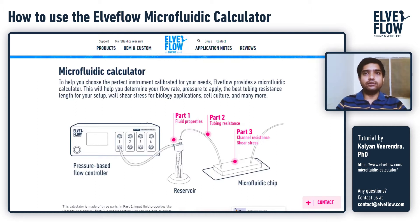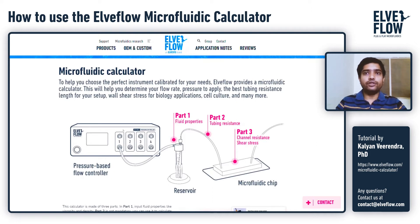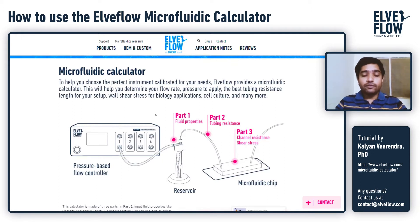To help you understand the overall system and its components, I will now describe them. The first component of any microfluidic system is the pump or pressure source, which is required to drive the fluid from the reservoir through the tubing into the microfluidic chip. As an analogy, we can think of the flow of electricity — just as you need a battery to drive electricity through a circuit, we require a pump or pressure source to drive the fluid into the chip. Together with the chip design, this determines the highest and lowest flow rates achievable in your system.